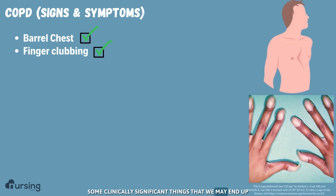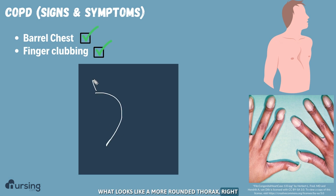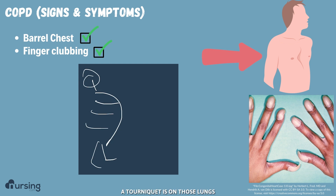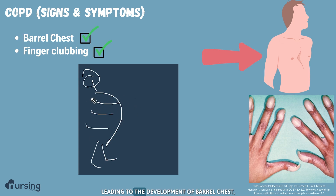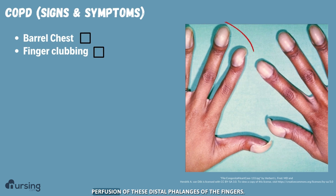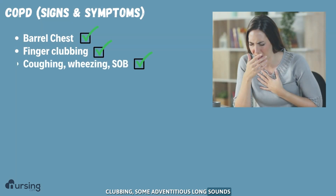Some clinically significant things we may see with patients include barrel chest and clubbing of the fingers. Patients develop what looks like a more rounded thorax, as they basically use their accessory muscles over a long period of time. They're having difficulty getting oxygen in and difficulty getting CO2 out — a tourniquet is on those lungs — and as a result they're using all of these accessory thoracic muscles, leading to the development of barrel chest. Also, clubbing of the fingers occurs due to chronic hypoperfusion of these distal phalanges, leading to the actual structural change in the shape of the fingers.